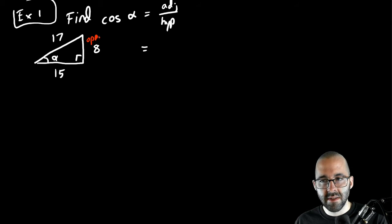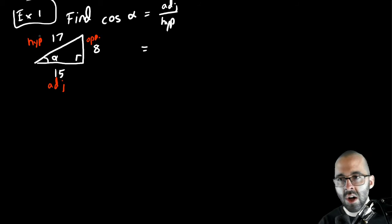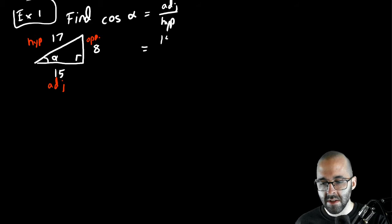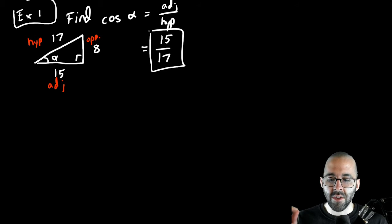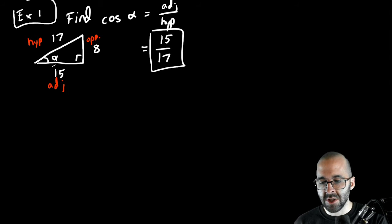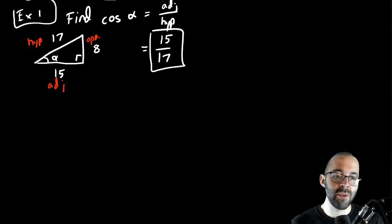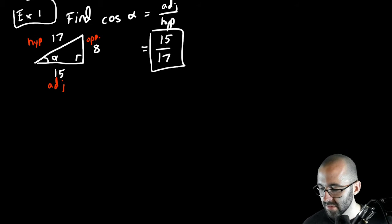The opposite is opposite the angle, the adjacent is the side touching the angle that's not the hypotenuse, and the hypotenuse is the longest side — the one opposite the right angle. So cosine of alpha is simply the adjacent, which is 15, divided by the hypotenuse, which is 17. All trig functions are just ratios — the ratio of two sides. Even though it confused me in ninth grade, it's just a ratio of sides in a triangle.